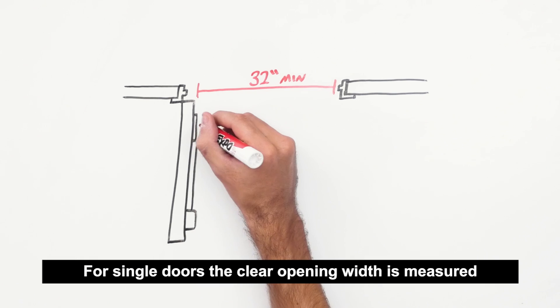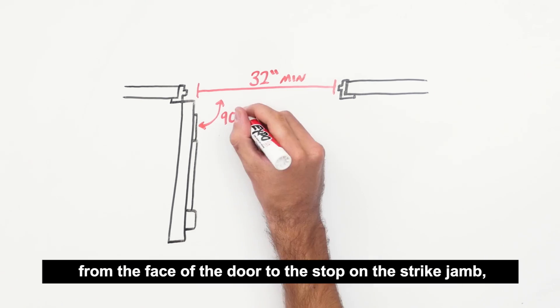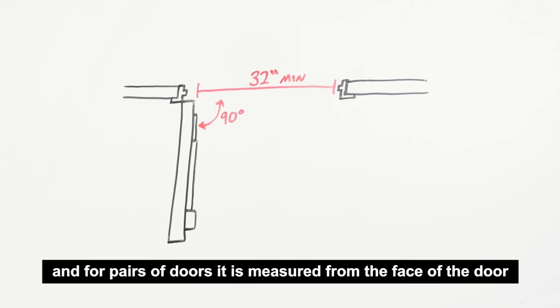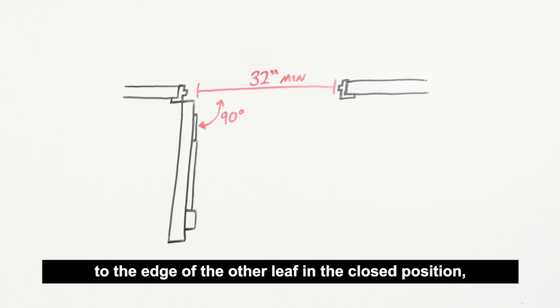For single doors, the clear opening width is measured from the face of the door to the stop on the strike jamb, and for pairs of doors it is measured from the face of the door to the edge of the other leaf in the closed position or to the mullion.